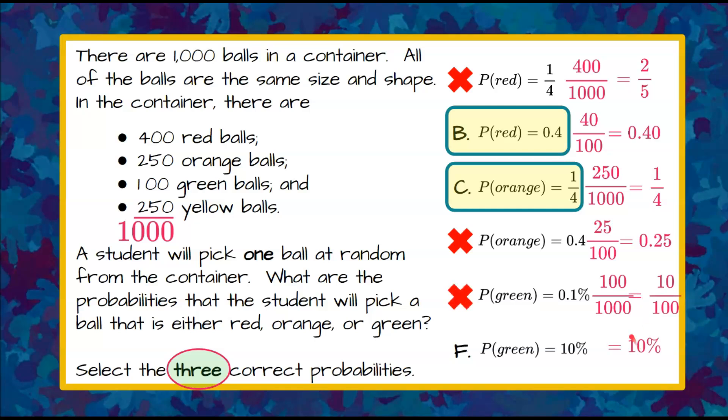Not 0.1%. So therefore I know the third correct answer, the probability of getting green, is 10%. So our three correct probabilities are B, C, and F.